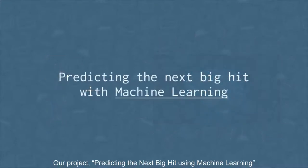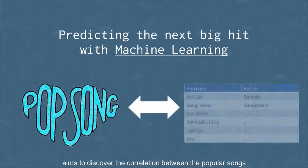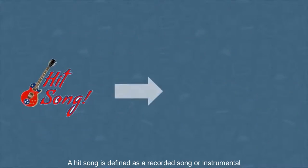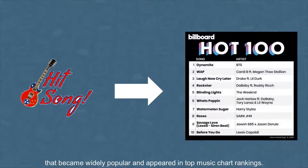Our project, predicting the next big hit using machine learning, aims to discover the correlation between popular songs and the various features that characterize it. A hit song is defined as a recorded song or instrumental that became widely popular and appeared in top music chart rankings.